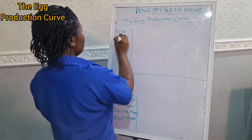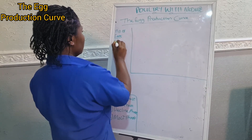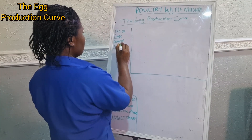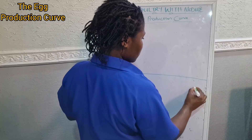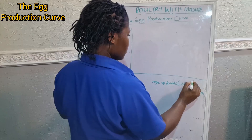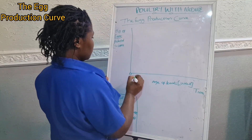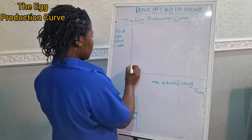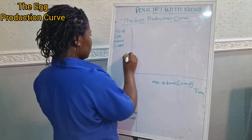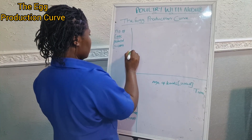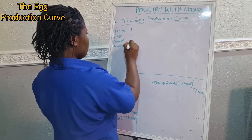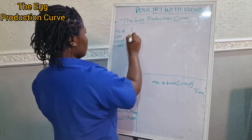To manage the egg production curve effectively, farmers can implement several strategies. Providing a nutritious diet tailored to the birds' specific needs can help optimize production. We also have to ensure that the birds have access to clean water, adequate space, and comfortable living conditions. Farmers can also use lighting programs to manipulate the egg production curve — for example, providing extra light during the pullet stage can help encourage earlier production. Regular vaccination, medication, and parasite control can help minimize the impact of disease on egg production.